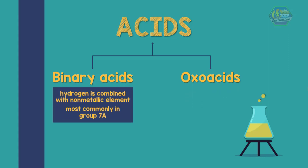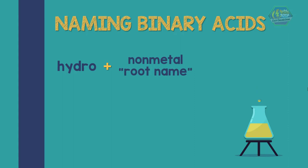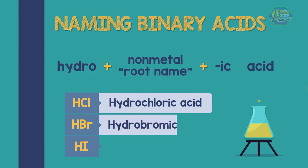Binary acids form when hydrogen is combined with a non-metallic element, most commonly in Group 7A. To name this kind of acid, we have the general structure: for the first word, hydro + non-metal root name + ic, followed by the word acid as the second word.